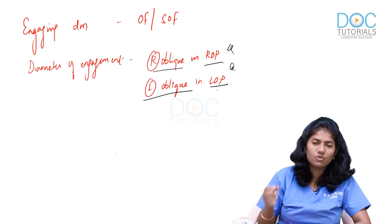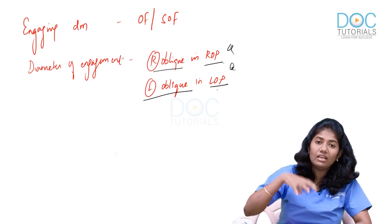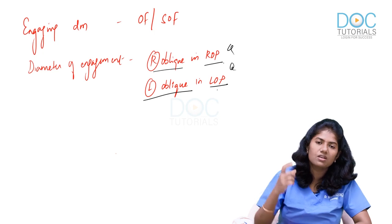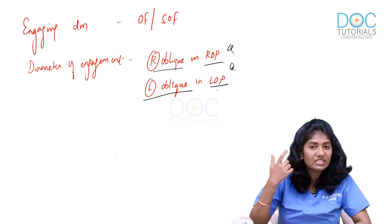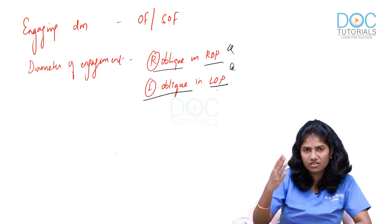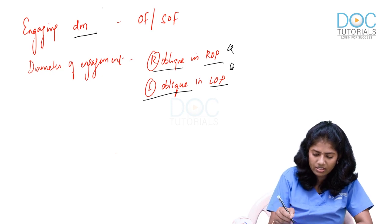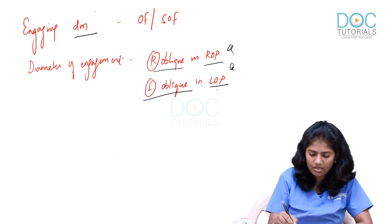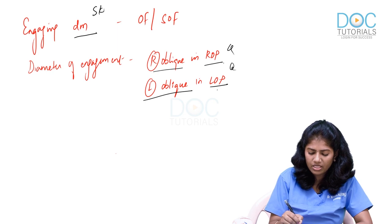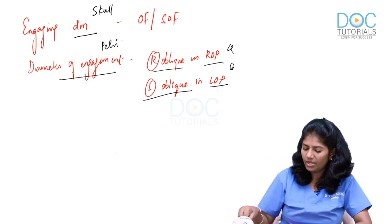An important distinction: the pelvic diameter is called the diameter of engagement, while the skull diameter is called the engaging diameter. Engaging diameter deals with the skull; diameter of engagement deals with the pelvis.